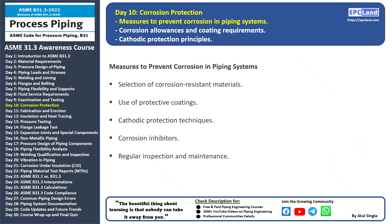Welcome back to our 30-day beginner course on ASME B31.3. Today we're discussing an essential topic: measures to prevent corrosion in piping systems. Corrosion is a common enemy of piping systems that can lead to structural damage and reduced lifespan. Material selection is the first line of defense — choosing corrosion-resistant materials like stainless steel or corrosion-resistant alloys can significantly extend the lifespan of the piping system.